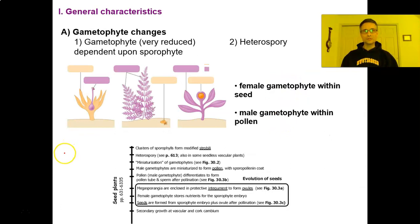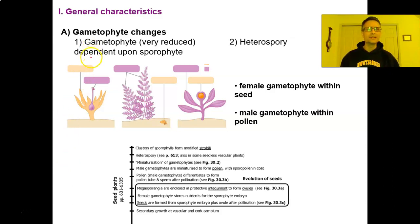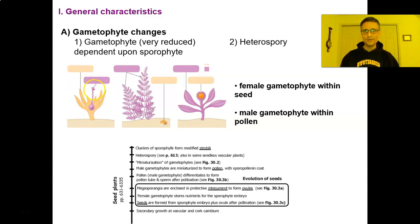Major changes in gametophytes needed for seeds to evolve: first, gametophytes become very reduced — so reduced they are dependent on the sporophyte. In our bryophytes, the gametophyte supported the sporophyte. In seedless vascular plants, the sporophyte was larger and capable of living independently, and the gametophyte could also live independently.